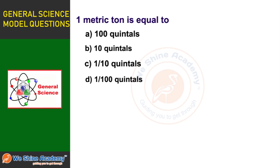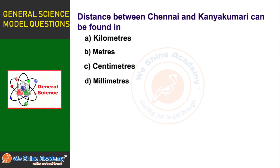The next question is: One metric ton is equal to — Option A: 100 quintals, Option B: 10 quintals, Option C: 1/10 quintals, Option D: 1/100 quintals. The answer is Option B: 10 quintals. One metric ton is equal to 10 quintals.